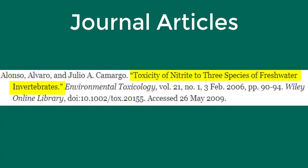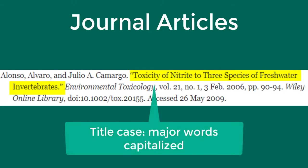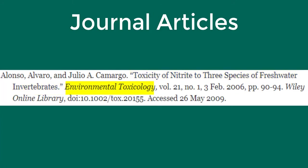After the author is the title of the article in quotations and a period. This is written in title case, which means all major words are capitalized. The journal title is then written in italics, followed by a comma. Then comes the volume number, abbreviated VOL., comma; the issue number, abbreviated NO., comma; the year of publication, comma; and then the page numbers of the article, period. The page range of the article follows the abbreviated PP., which stands for pages plural.